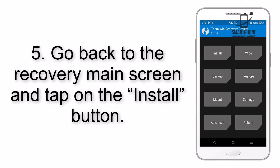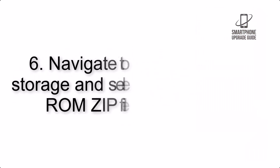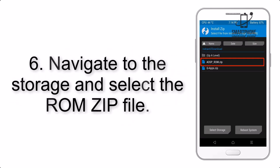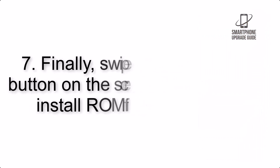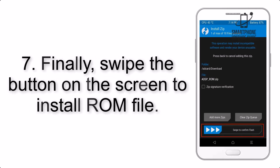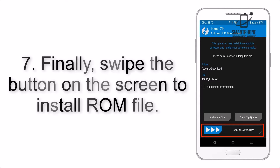Step 4: Swipe the button to wipe the device. Step 5: Go back to the recovery main screen and tap on the Install button. Step 6: Navigate to the storage and select the ROM zip file.